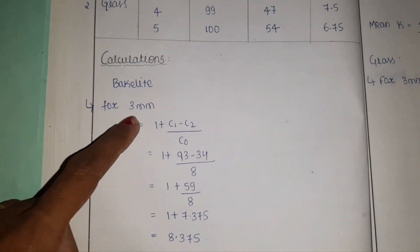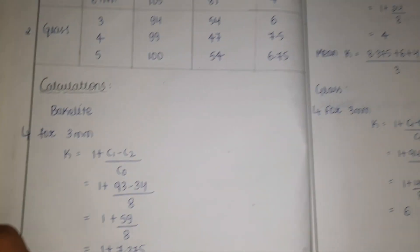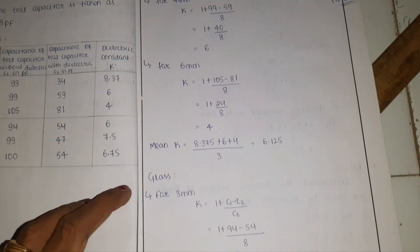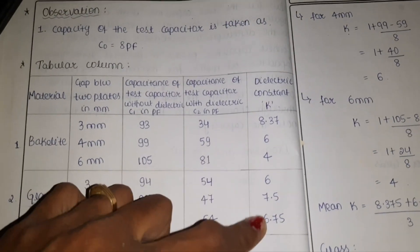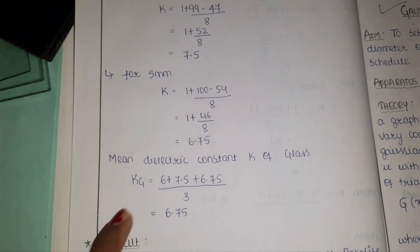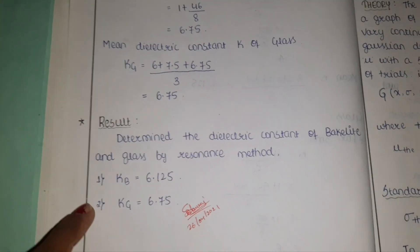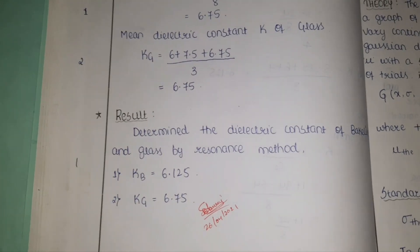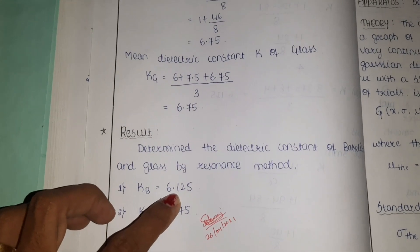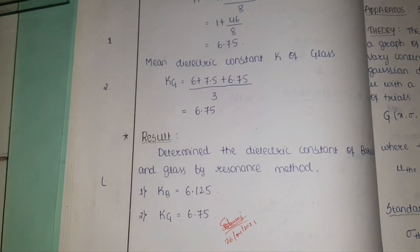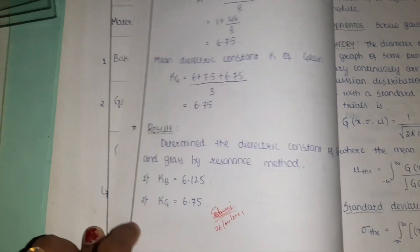In the tabular column, values have been calculated for 3 mm for both bakelite and glass plate. Calculate the dielectric constant using the formula for all three thicknesses, write the values in the column, and then take the average separately for both glass and bakelite. The final results using this resonance method are: the dielectric constant of bakelite (kb) is about 6.12, and the dielectric constant of glass (kg) is 6.7.